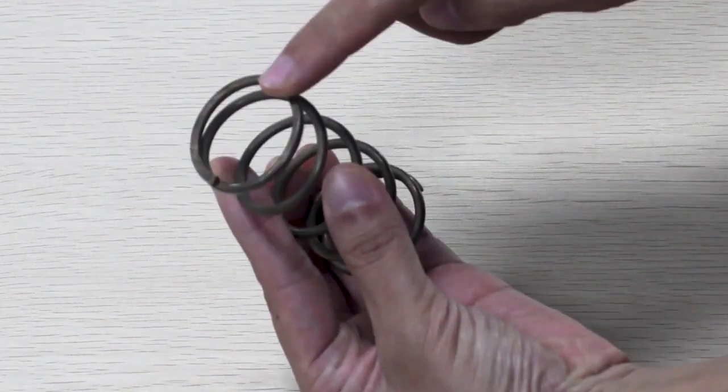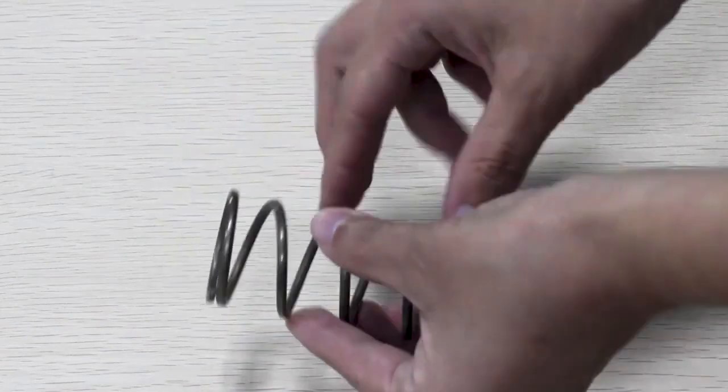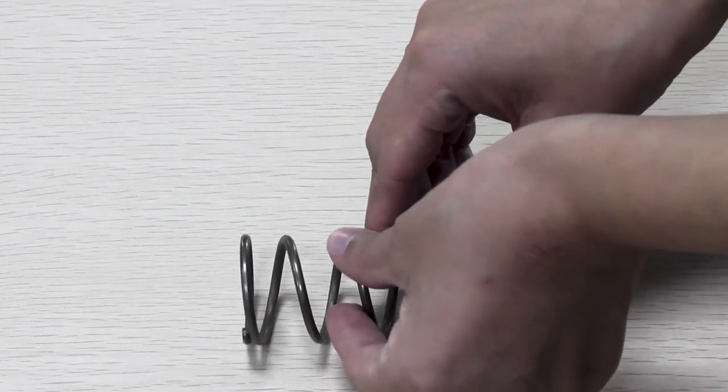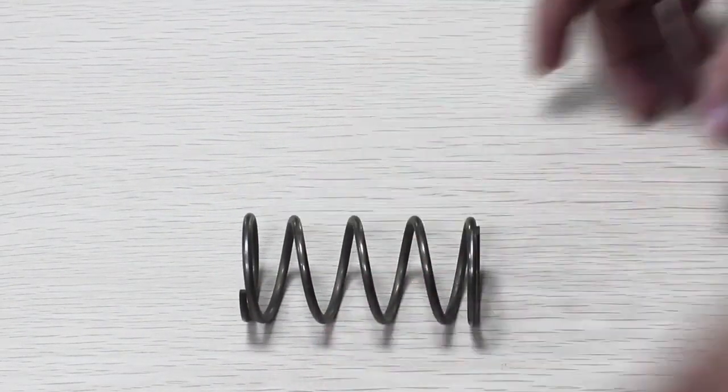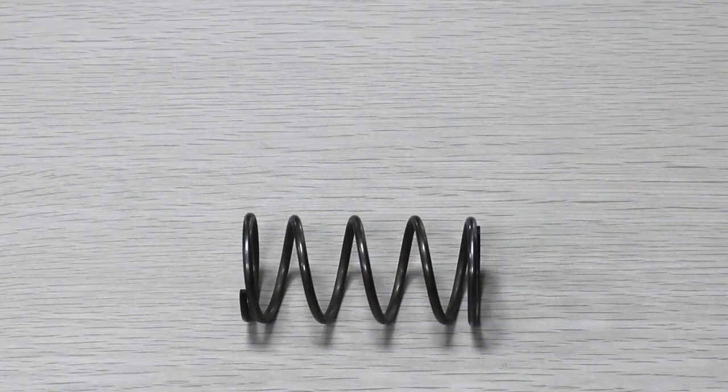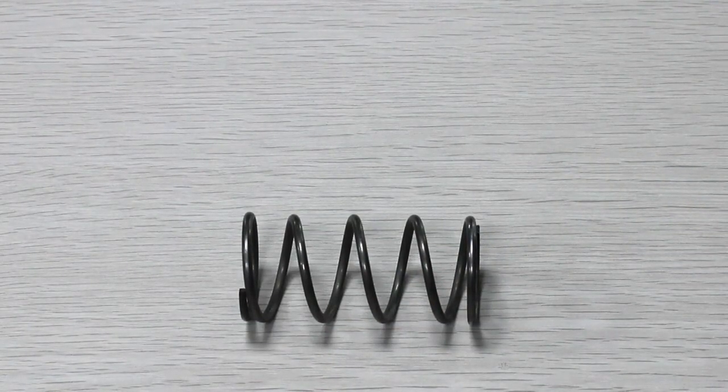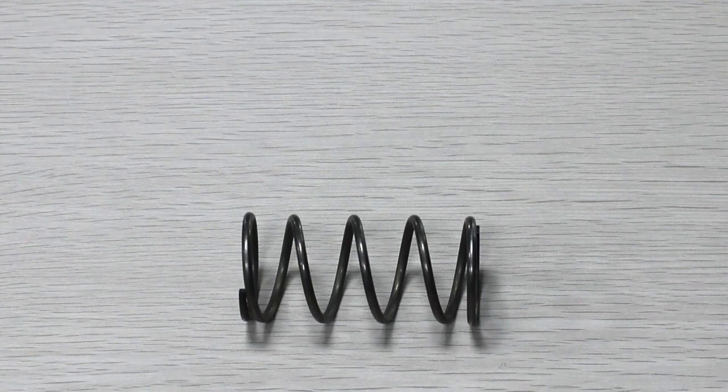The most accurate and recommended method is measuring the space between the coils. It is best to measure the space in two spots towards the center of the spring and take the average. The space between the coils for this spring is 18 millimeters.